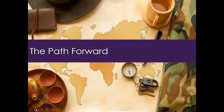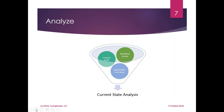So how do we deal with all this complexity? Let's start by looking at where you are — doing a current state analysis. Before you can decide where you want to be, you have to know where you are. It's like hiking: you have to know what trailhead you're at in order to know how far it is to climb to the top of the peak. Three things that will help are stakeholder interviews, a content audit, and a workflow review. Depending on what you're doing, you may also want to include a competitive review.